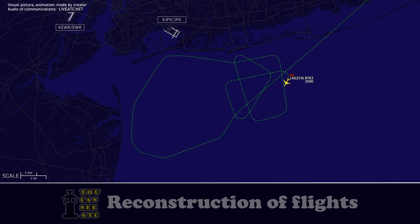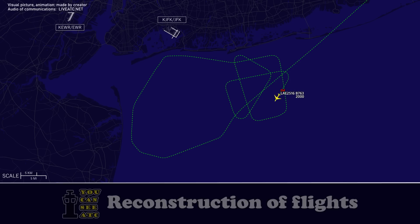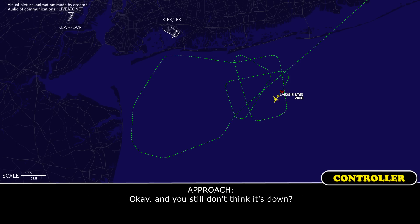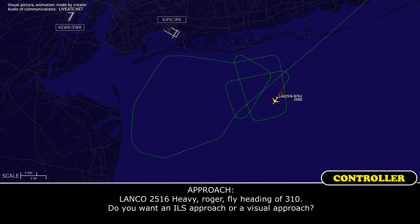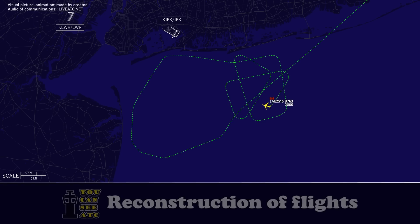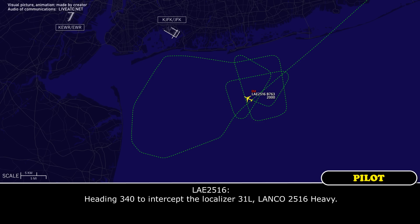Would you like to do a low approach so the tower can see if the gear is down? Negative — we are ready for the approach, Lanko 2560 heavy. Fly heading 310. Do you want an ILS approach or a visual approach? We want an ILS approach. Right heading 310, Lanko 2560 heavy. Roger, heading 340 to intercept runway 31L localizer. Heading 340, intercepting localizer 31L, Lanko 2560.